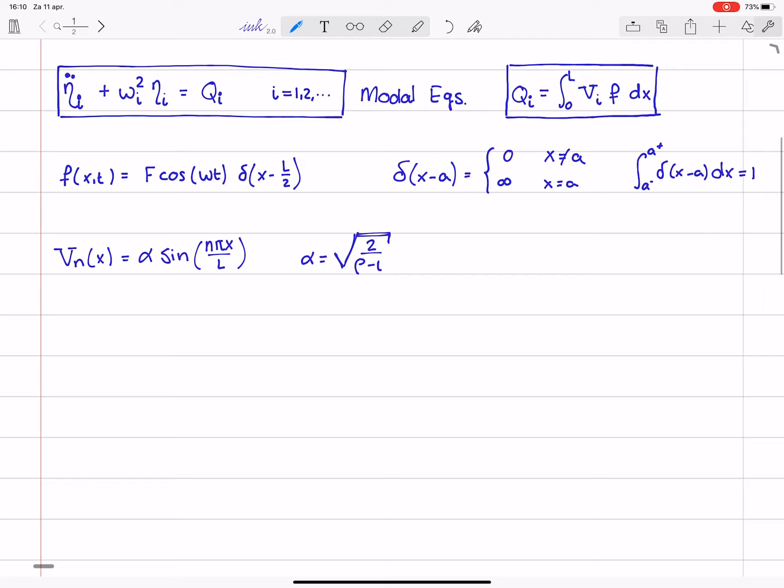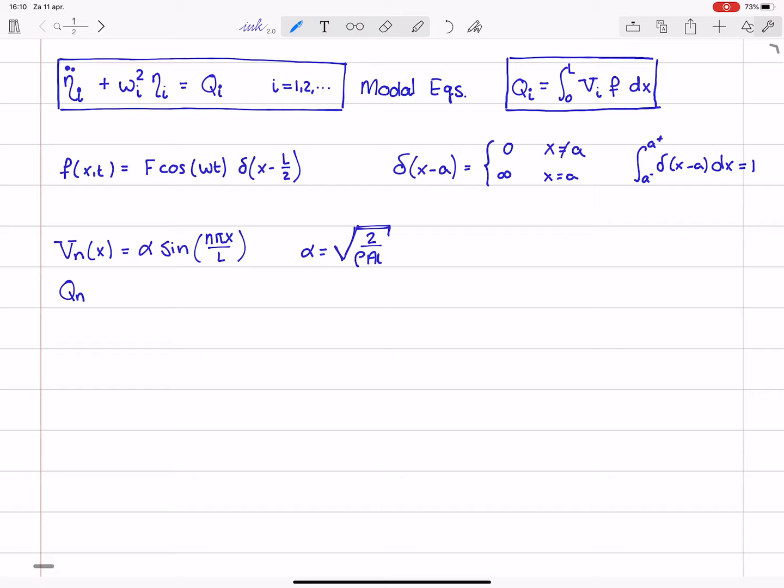So, upon substitution, and I will switch indices now from i to n, because I think it's more convenient, we obtain that qn, which will be, in the end, only a function of time,